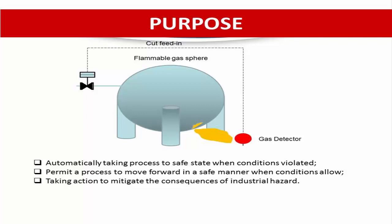The purpose of the SIS includes: first, automatically taking an industrial process to a safe state when specific conditions are violated; second, permitting a process to move forward in a safe manner when specific conditions allow, as a permissive function; or taking action to mitigate the consequences of industrial hazards. So the responsibilities of the SIS cover shutdown function, permissive function, and consequence reduction or mitigation function.